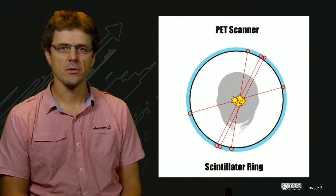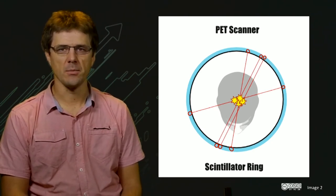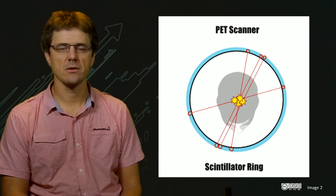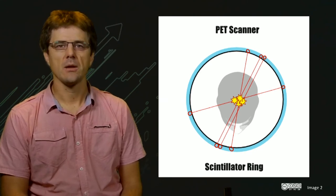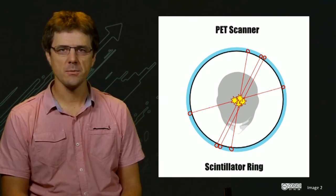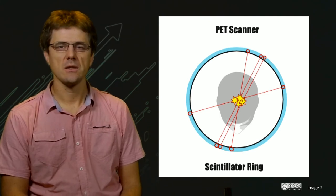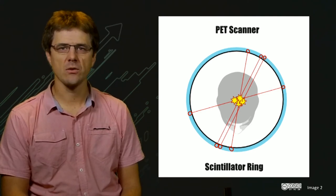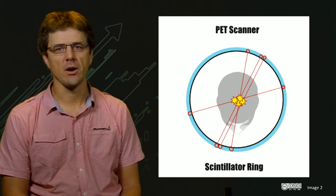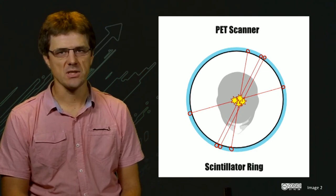In PET, signal is generated by two gamma rays being emitted by a radiotracer and striking the scintillator ring. The path of these gamma rays will also be attenuated by surrounding tissues. This attenuation will be to a lesser degree as the gamma rays are of higher energy than the X-rays used in CT imaging.